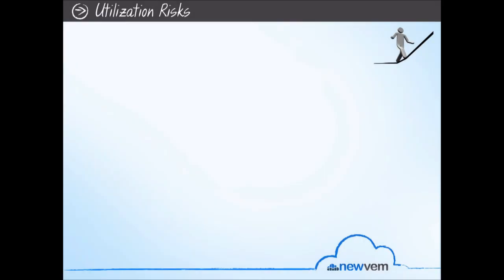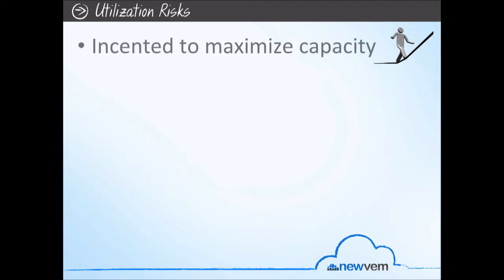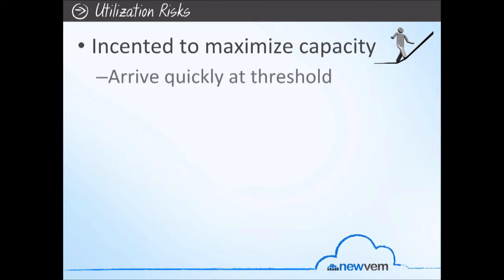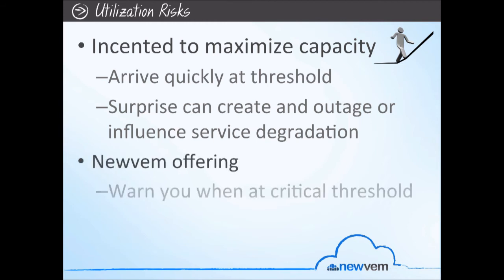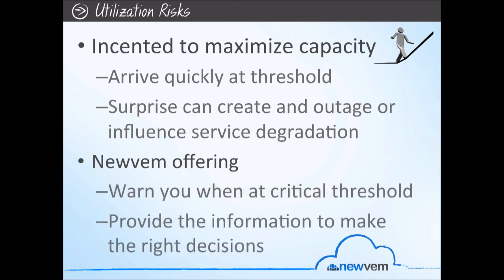What kind of risk hides behind utilization? In cloud computing, we're very incentivized to maximize the capacity that we're paying for and using. However, we can quickly arrive at a threshold where it becomes a very slippery slope — any surprise can either create an outage or cause some level of degradation of service to our customers. At Nuvim, we warn you of being at that critical threshold and provide you the information to make the right decision for your business.